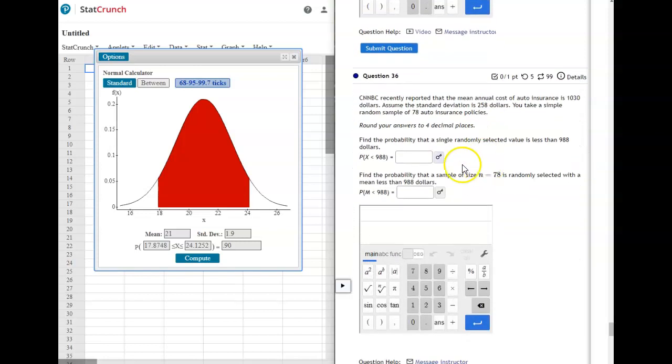So on this one, we've got CNNBC recently reported that the mean annual cost of auto insurance is $1,030. Assume the standard deviation is 258 with a simple random sample of 78 auto insurance policies.